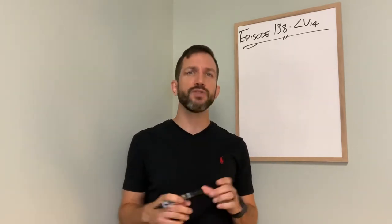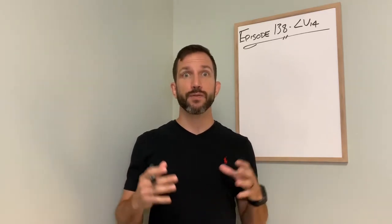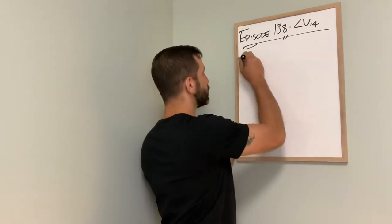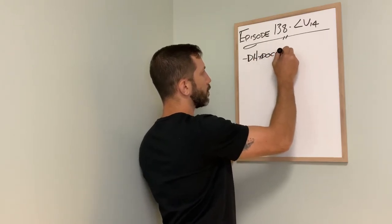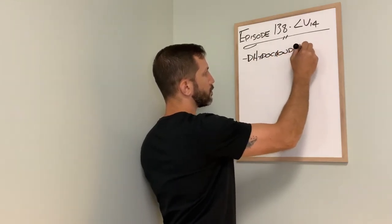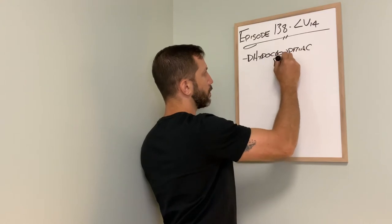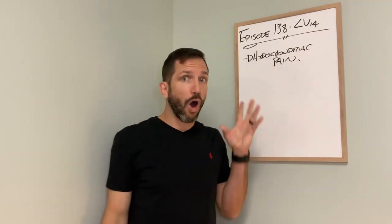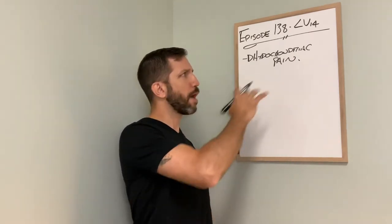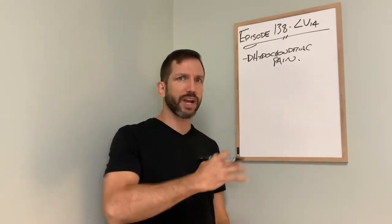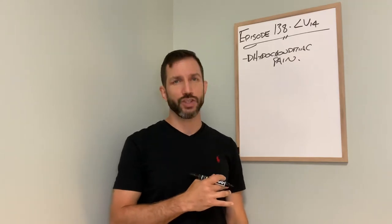So the number one reason I'm using liver 14 in the clinic is for hypochondriac pain. Now, if we want to augment our treatment, we could use some symptomatic pairs for hypochondriac pain. We could use triple warmer 6 and GB34.